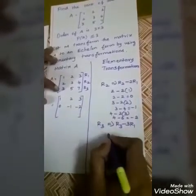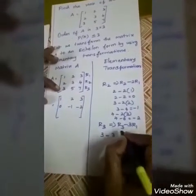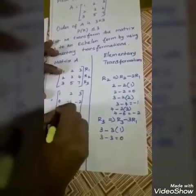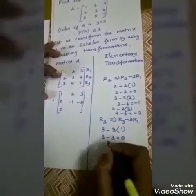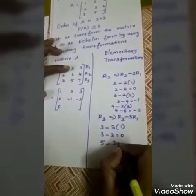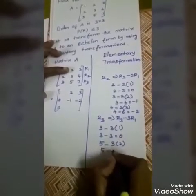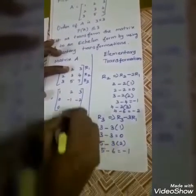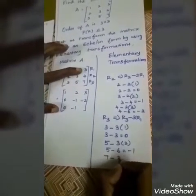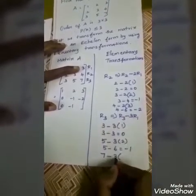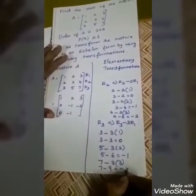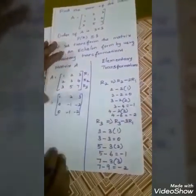Next, R3 equals R3 minus 3R1. First element: 3 minus 3 equals 0. Next element: 5 minus 3×2 equals 5 minus 6 equals minus 1. Next element: 7 minus 3×3 equals 7 minus 9 equals minus 2. So we got the intermediate matrix.